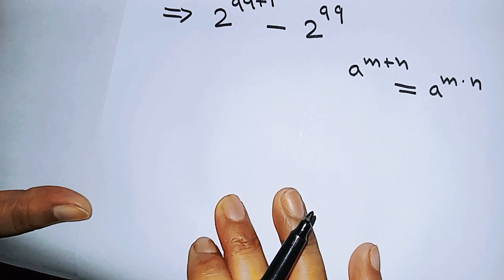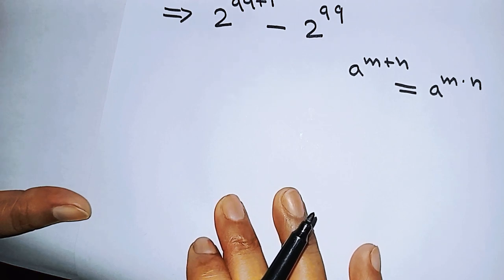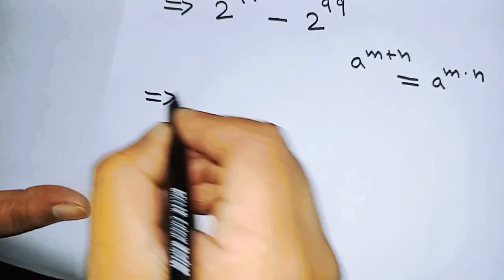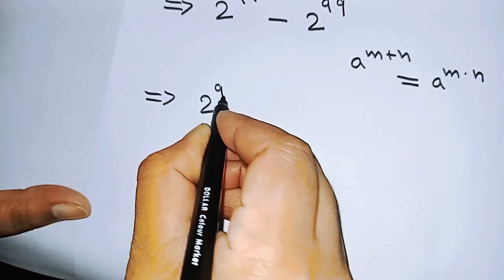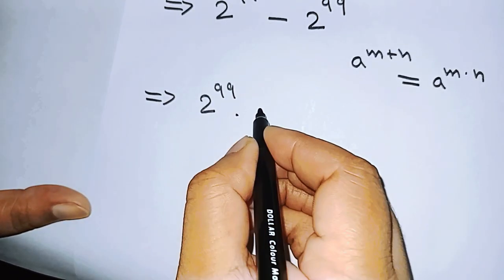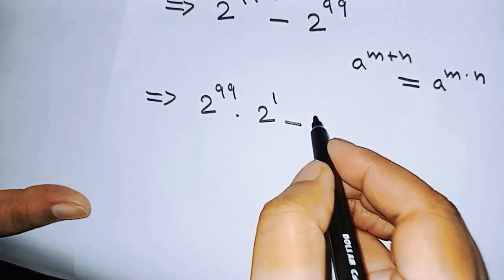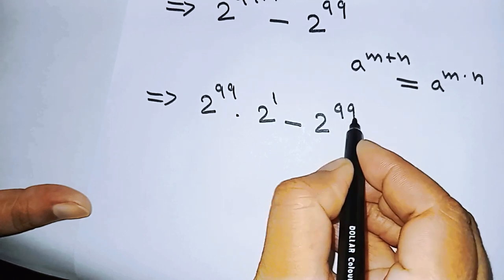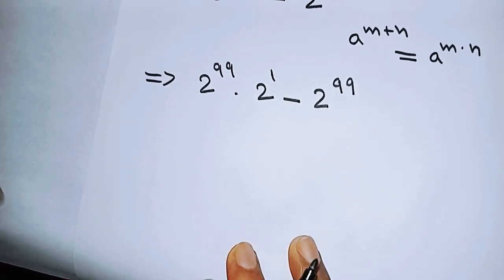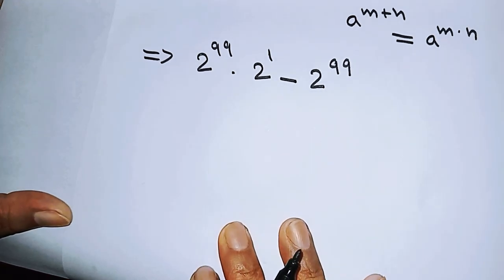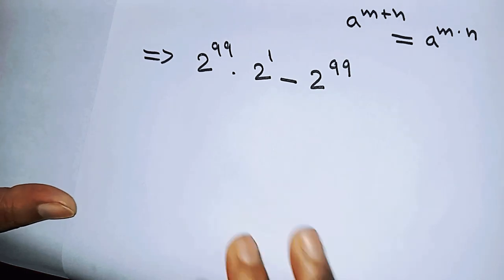So this law of indices, now you can write 2 power 99 into 2 power 1 minus 2 power 99. Now there is a common factor 2 to the power of 99, so you can take it out.